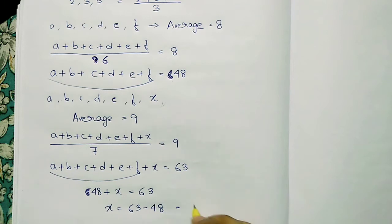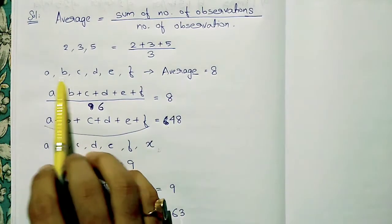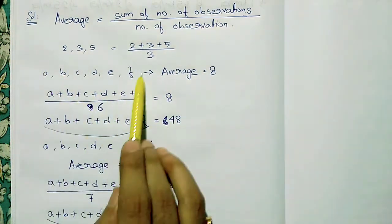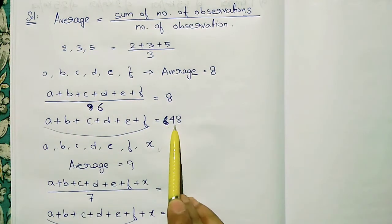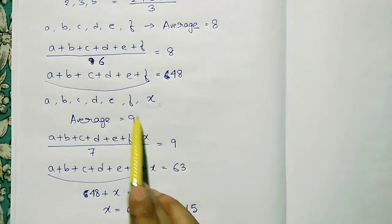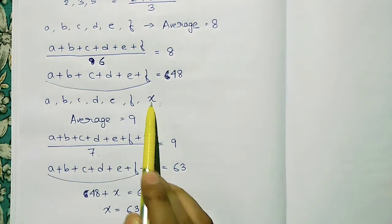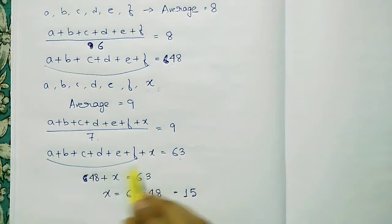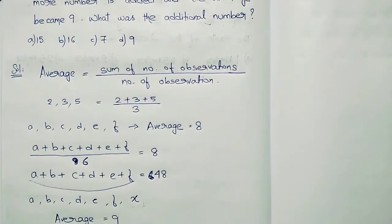So x equals 63 minus 48. It is a simple mistake — 6 times 8 is 48. So 9 times 7 is 63. The answer is x equals 15. The number is 15.